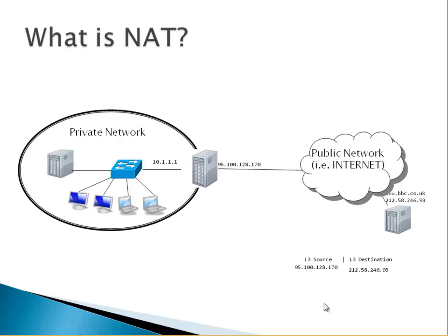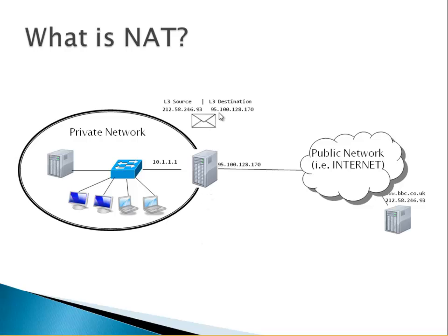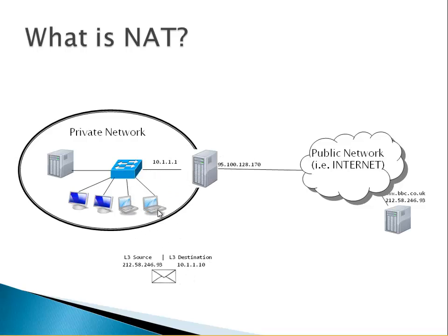When the BBC replies, it puts itself as the source and uses that public IP address as the destination. It sends the packet back, and then our gateway receives it, removes the Layer 3 destination, looks in its database, finds that it originated from the laptop, adds the laptop's IP address as the destination, and forwards it. As far as the laptop is concerned, it was a clean, direct communication with the BBC server — but behind the scenes, the router was performing Network Address Translation.